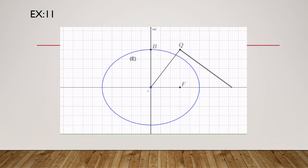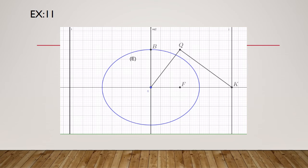We draw the line perpendicular to OQ passing through Q. This line cuts the line of F at point K. The directrix is a line passing through K and perpendicular to the line of F. The second directrix can be obtained by symmetry. Now we want to construct the principal vertex A. We know Q belongs to the auxiliary circle — the circle of center O and radius OA.